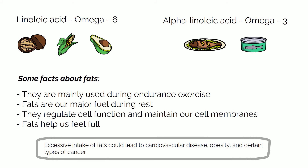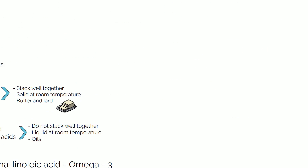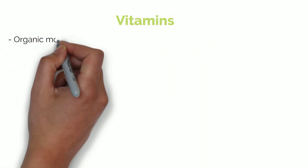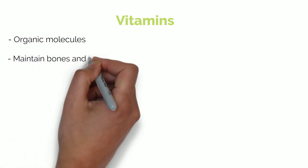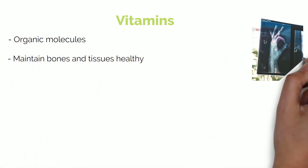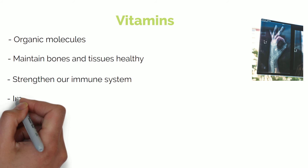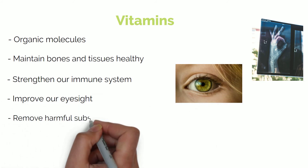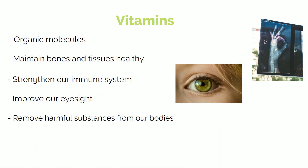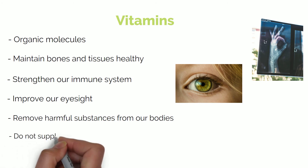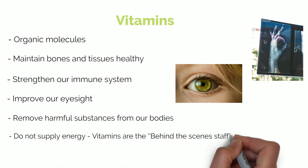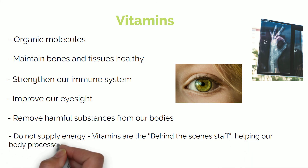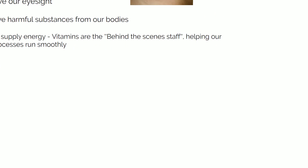Now moving on to the micronutrients that we should include in our diets: vitamins and minerals. Vitamins are organic molecules which are extremely beneficial for our bodies, maintaining our bones and tissues healthy, strengthening our immune systems, improving our eyesight and removing harmful substances from our bodies. However, vitamins do not supply energy to our bodies — that is up to the macronutrients mentioned earlier. Vitamins are simply the behind-the-scenes stuff, helping our body processes run smoothly.